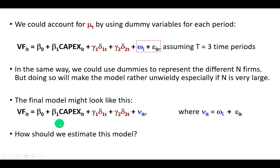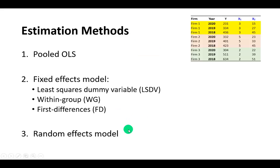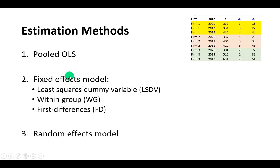The question then becomes: how should we estimate this final model? To answer this, we're going to consider pooled OLS, the fixed effects model, and the random effects model. At the minimum, these are the econometric models that must be considered in any panel data regression, and they are explained over the course of this video series.